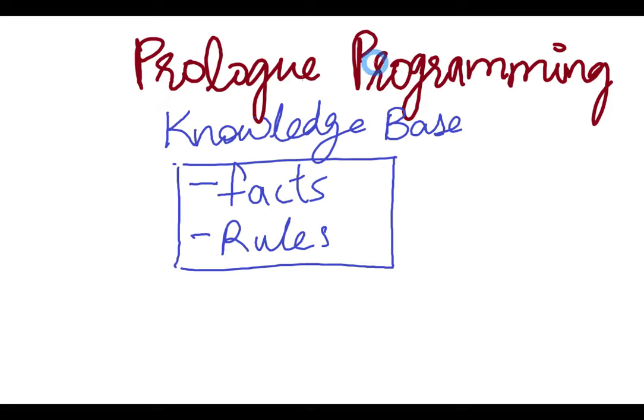Let's learn about some basics of Prolog programming. In Prolog programming, we have a knowledge base, which is just a set of information that you are provided with. A good example can be the human brain — the human brain is a knowledge base that has all the knowledge or information it has acquired so far. A knowledge base in Prolog programming comprises of two things: facts and rules.